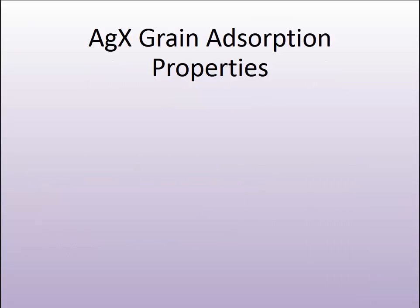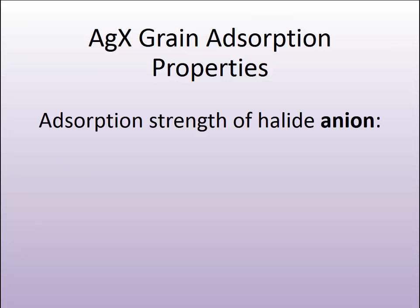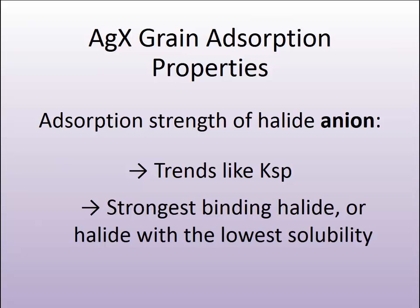As we've mentioned, one of the differences in the chemical adsorption properties of the silver halide grain systems is found with the absorption of the halide anion. They trend pretty much as the KSP trends. The strongest binding halide is the one with the lowest solubility, and that's the iodide anion.